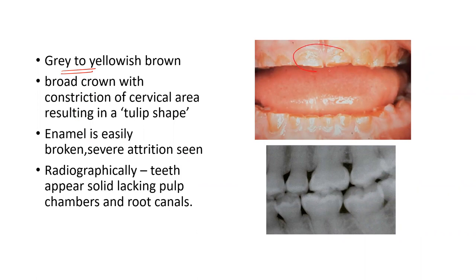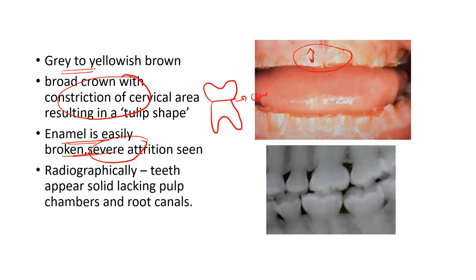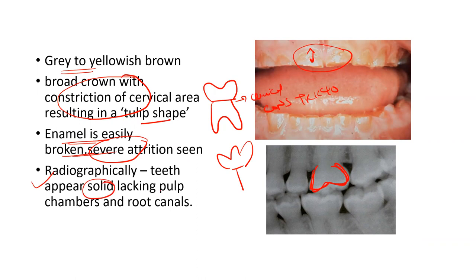In general, the teeth appear grayish to yellowish brown in color. The enamel is easily broken and there is severe attrition with loss of vertical height. Radiographically, you see a broad crown with constriction at the cervical area in the shape of a tulip — this is why it is called tulip shape. The teeth also appear solid because of the lack of pulp chambers and root canals.